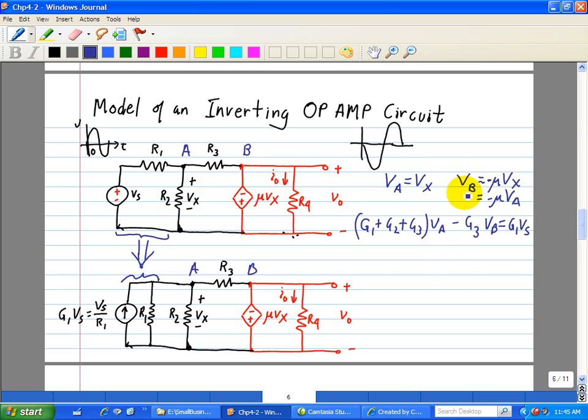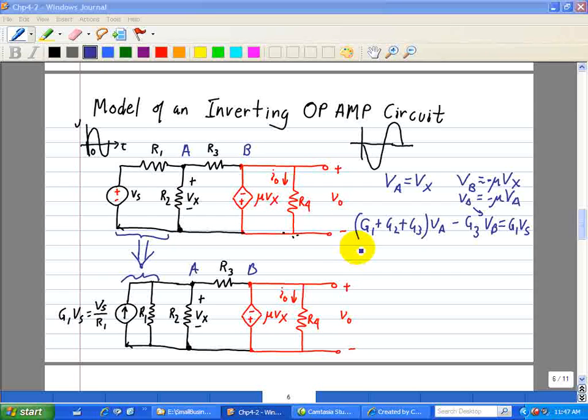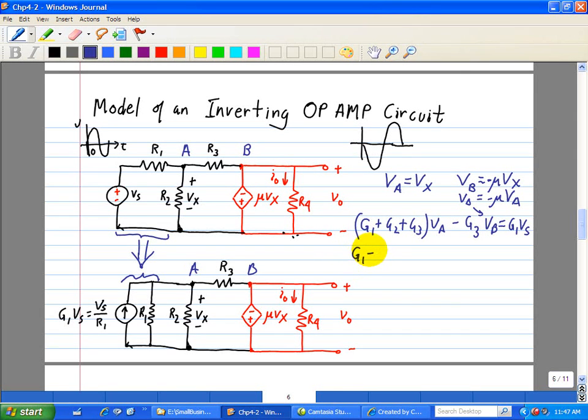Now we substitute Vb into this equation here, and we have G1, and then we note there's a Va here, so this just yields G1 plus G2 plus G3. And we note we have one G3 here, but when we substitute for Vb, we have a minus mu G3.